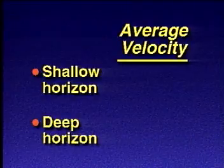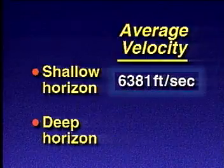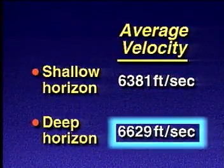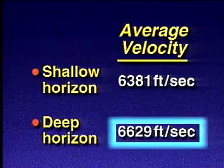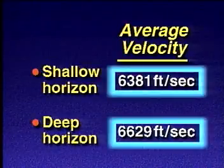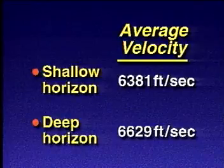So we've calculated an average velocity to the shallow horizon of 6,381 feet per second, and an average velocity to the deeper horizon of 6,629 feet per second. In general, average velocity increases with increasing depth due to compaction.